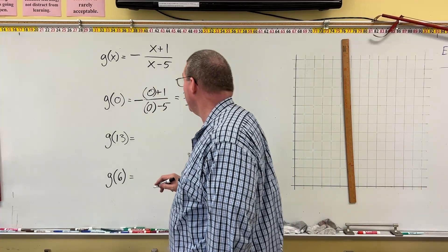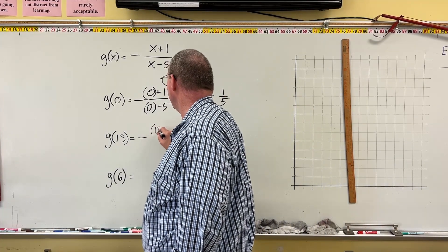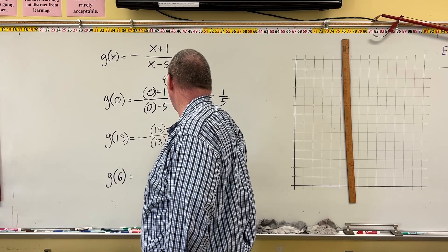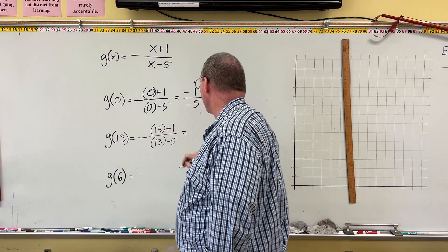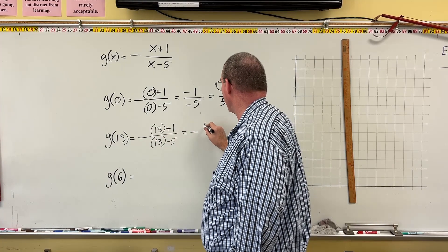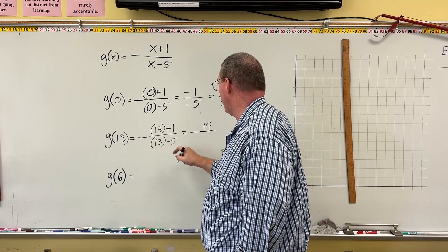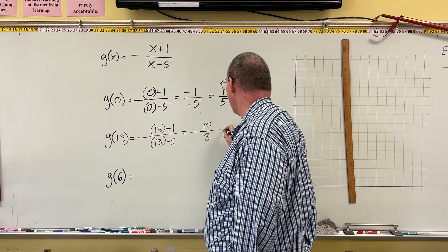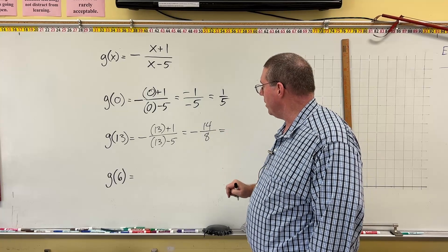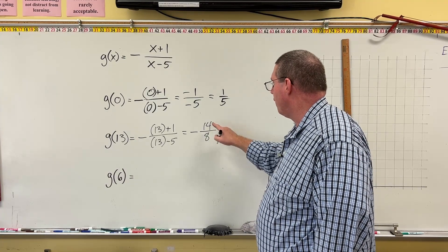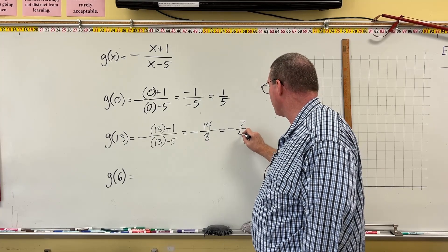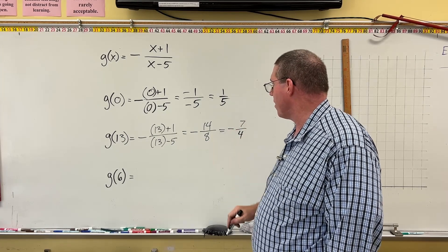For g(13), we write negative (13 + 1) over (13 − 5). Don't forget the negative sign. 13 + 1 = 14, and 13 − 5 = 8, giving −14/8. We can reduce: divide both by 2, giving −7/4. So when the input is 13, the output is negative 7 over 4.